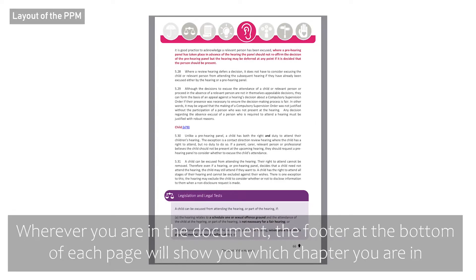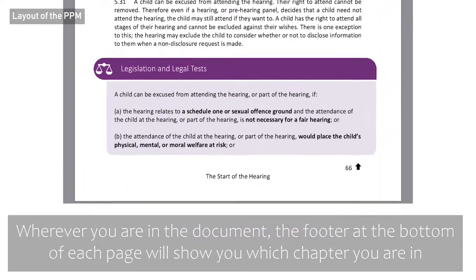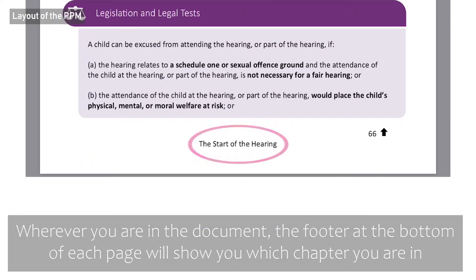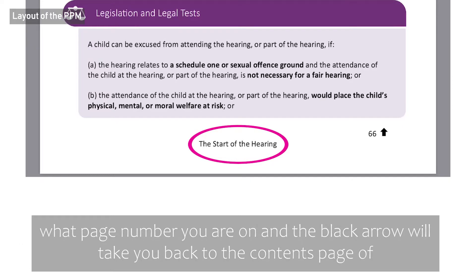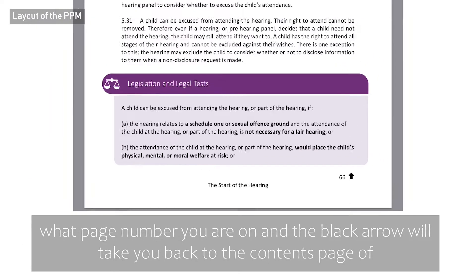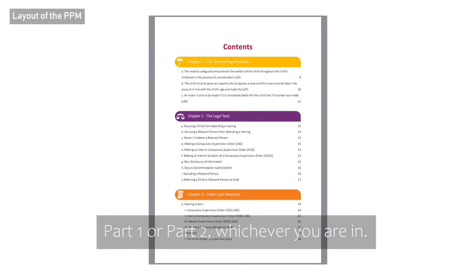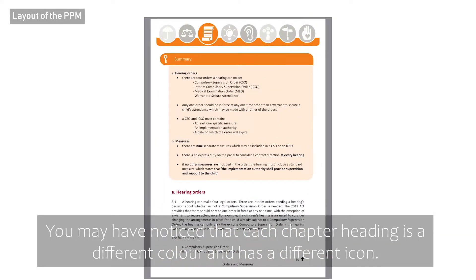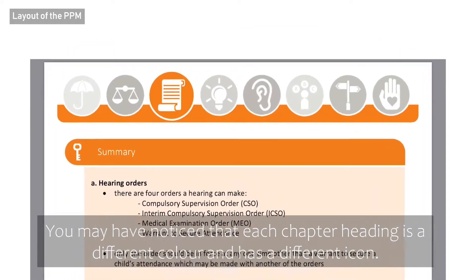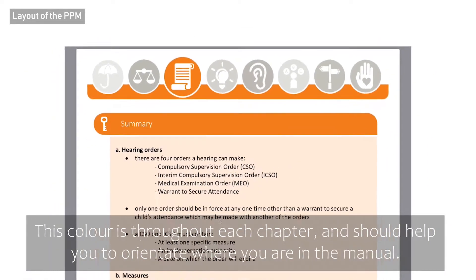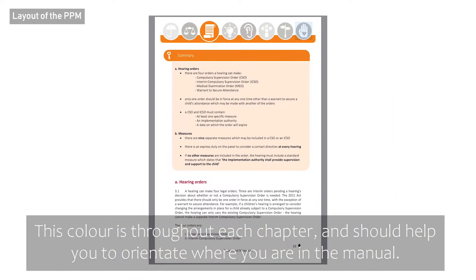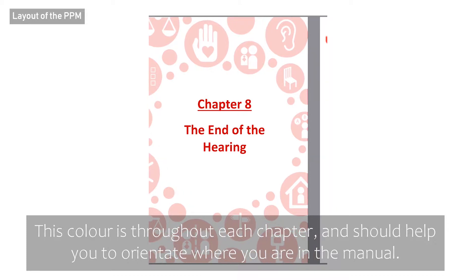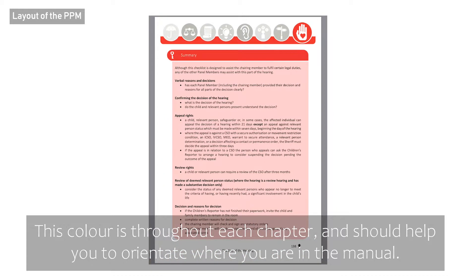Wherever you are in the document, the footer at the bottom of each page will show you which chapter you are in, what page number you are on, and the black arrow will take you to the contents page of Part 1 or Part 2, whichever you are in. You may have noticed that each chapter heading is a different colour and has a different icon. This colour is used throughout each chapter and should help you to orientate where you are in the manual.